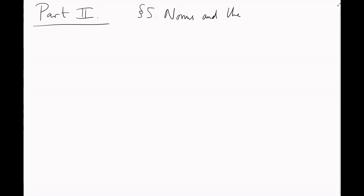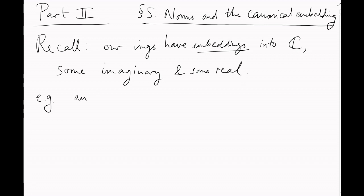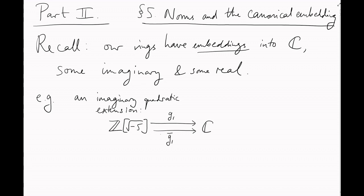Section 5, Norms and the Canonical Embedding. If you've watched the last two videos, you'll know that our rings always have a bunch of embeddings into the complex plane. Some are imaginary, some are real. An imaginary quadratic extension of z has two imaginary embeddings, which are complex conjugates of each other. Pick either one of these, then our two-dimensional additive lattice picture embeds nicely inside the complex plane, because the complex plane is a two-dimensional real vector space.